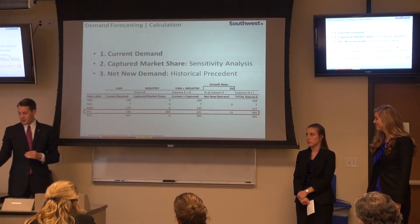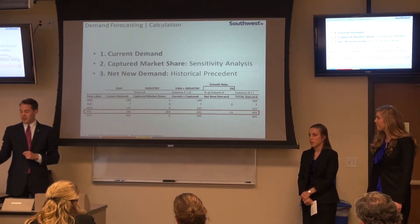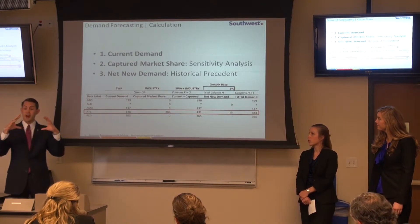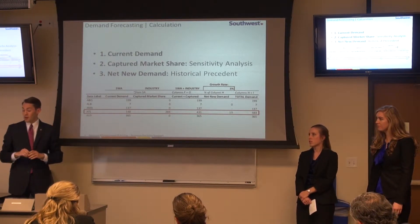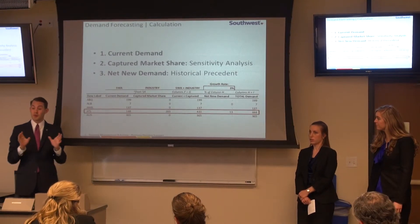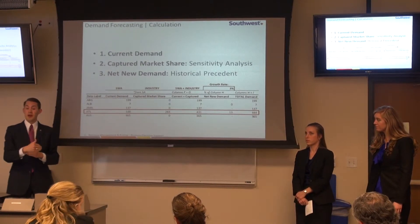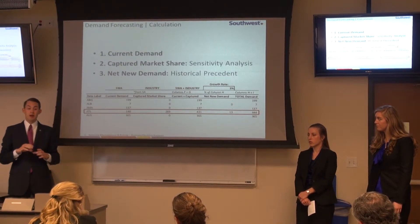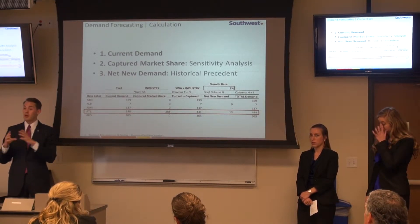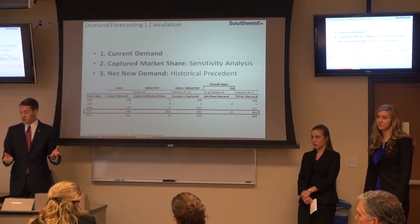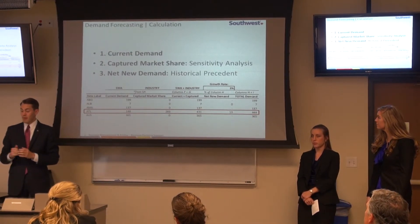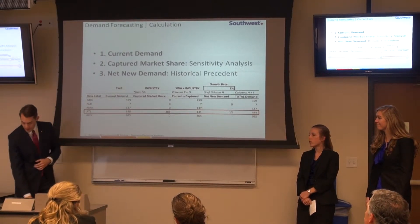The next column sums the current demand and captured market share. Finally, we look at overall market growth — the market pie expansion. Our growth rate was 3%, determined from historical precedent. For example, we looked at how the Denver market grew when Southwest entered, or how the Portland market grew when Southwest started offering service there. From there, we summed total demand and fed it into the model.